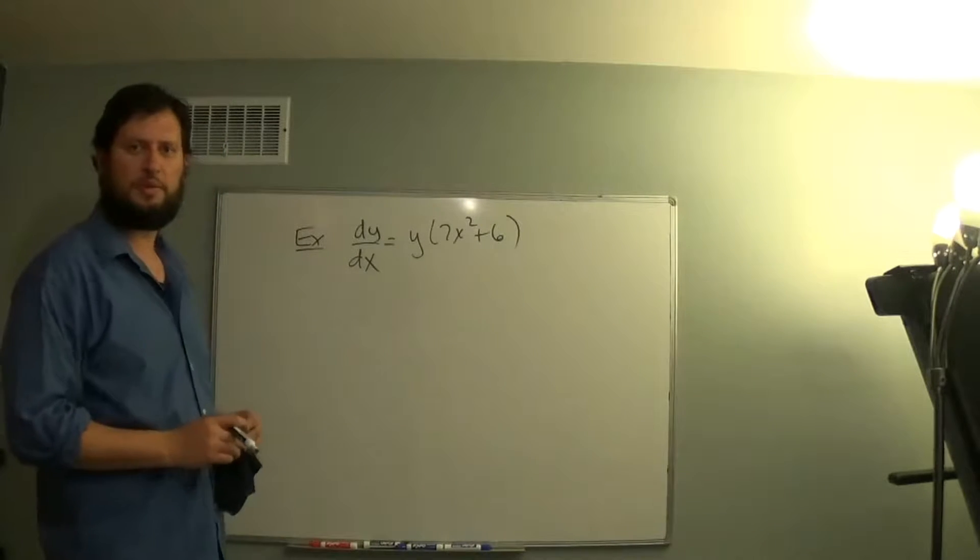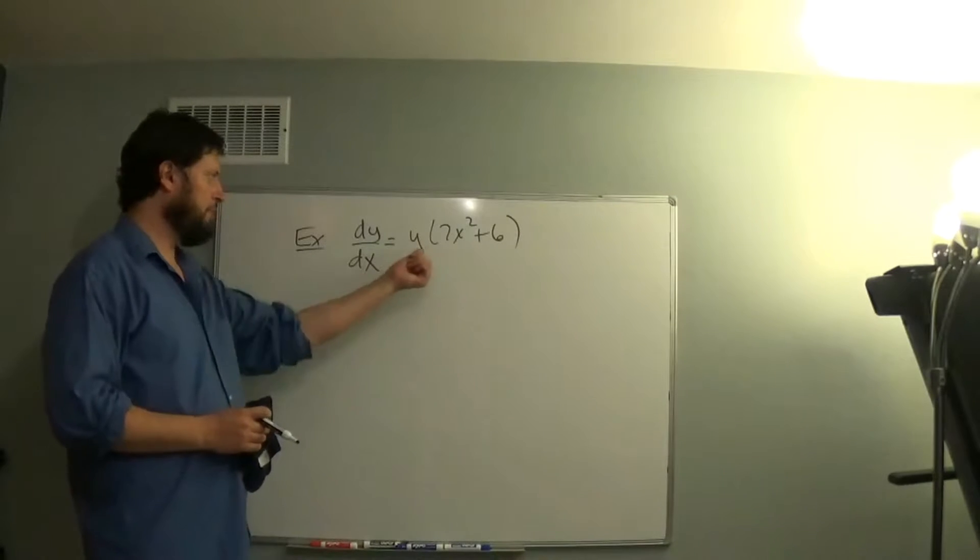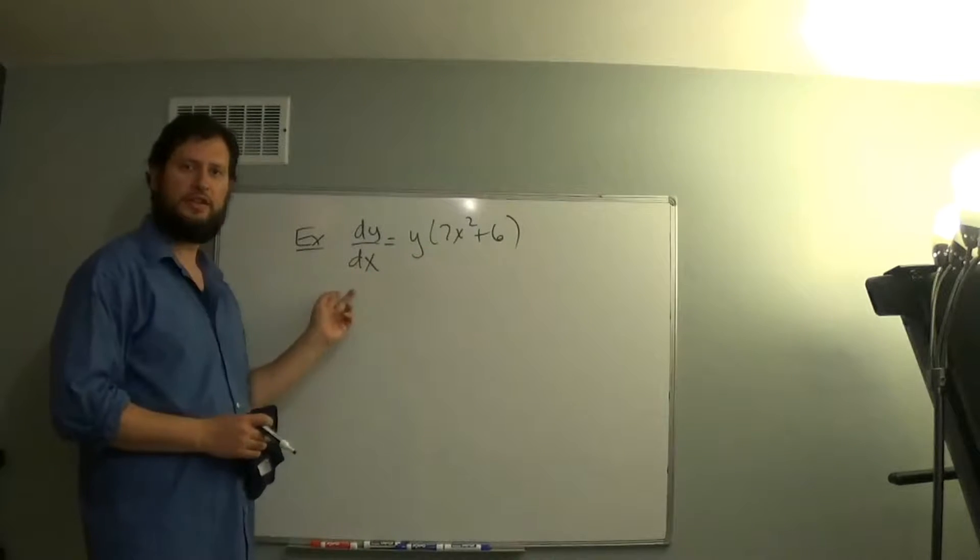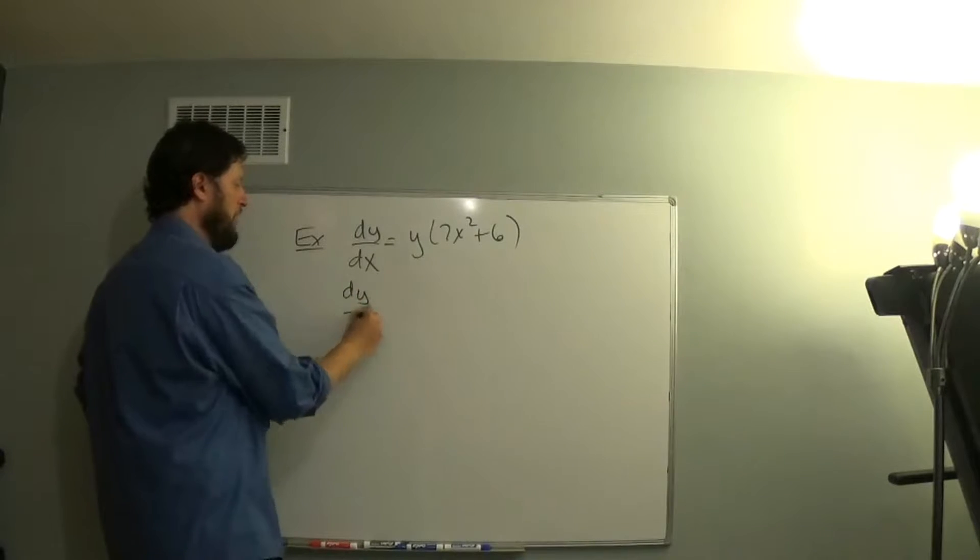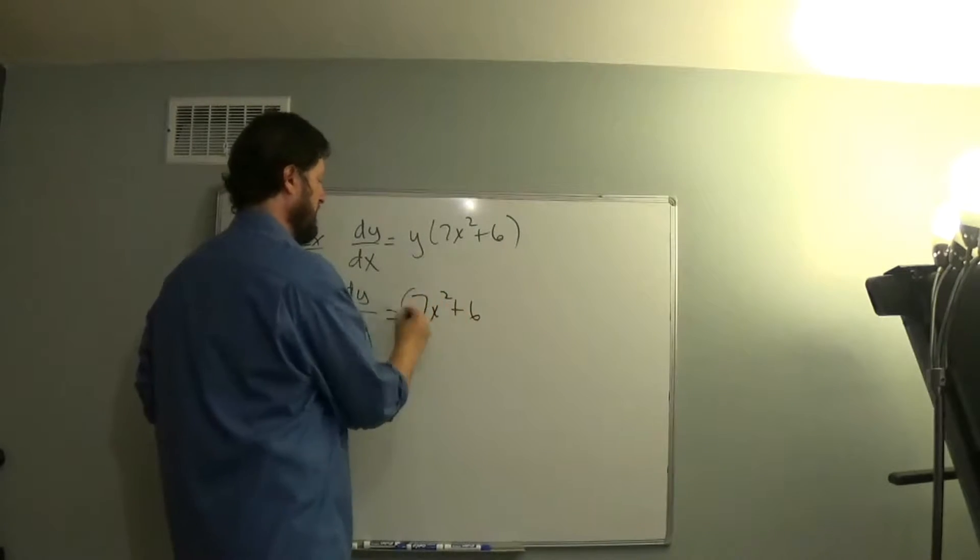Let's solve this differential equation by separation of variables. We'll separate the variables by bringing the y to the left and the dx to the right. So that makes dy over y equals 7x squared plus 6 dx.